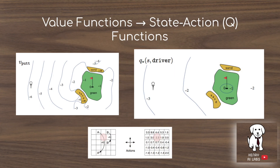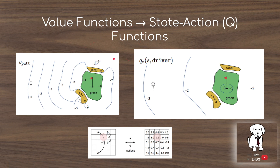In the grid world we estimate the value of each state with respect to actions like moving up, right, down, or left. It's also helpful to understand the difference between value functions and state-action functions. Using the golf example: if the only action is to putt, we get one contour map of expected rewards across the map; if we use the driver, we get a different contour map. This golf example concretely illustrates the difference between value functions V and state-action (Q) functions, where different actions produce different value landscapes.